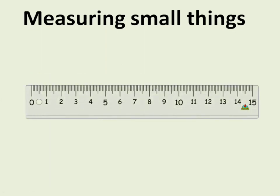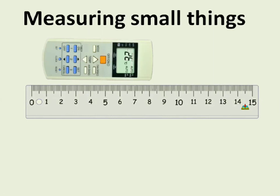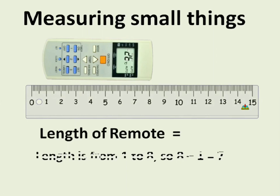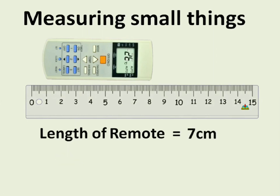Now let's measure the length of a remote. The length starts from one to eight, so eight minus one is seven. Hence it is seven centimeter long. Note here the start point is one, not zero. Hence we did eight minus one.